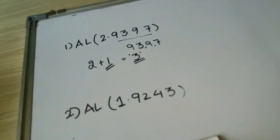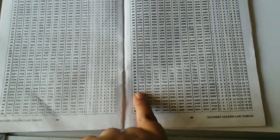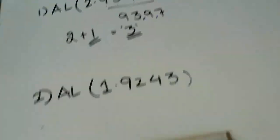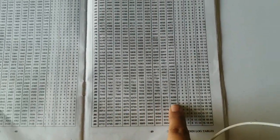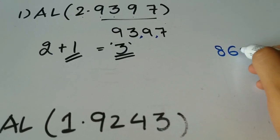So here in antilog I have this table here with me. I would look in column 93. Here it is, 93. Next number is 9, so I would look in column 9 of 93. So here it is, 8690. I will note that down here.